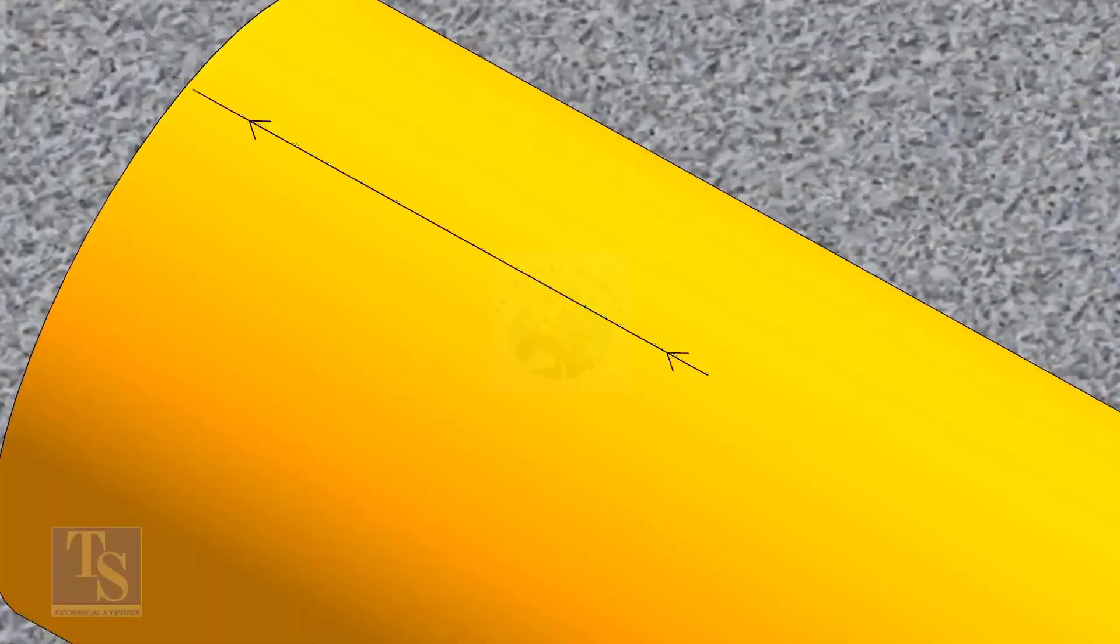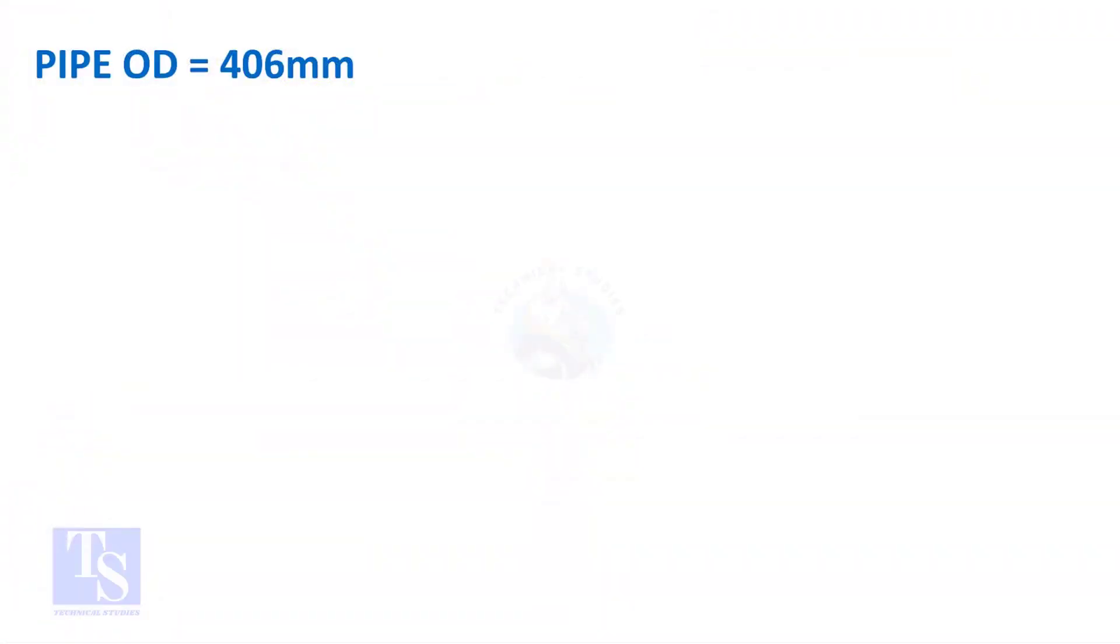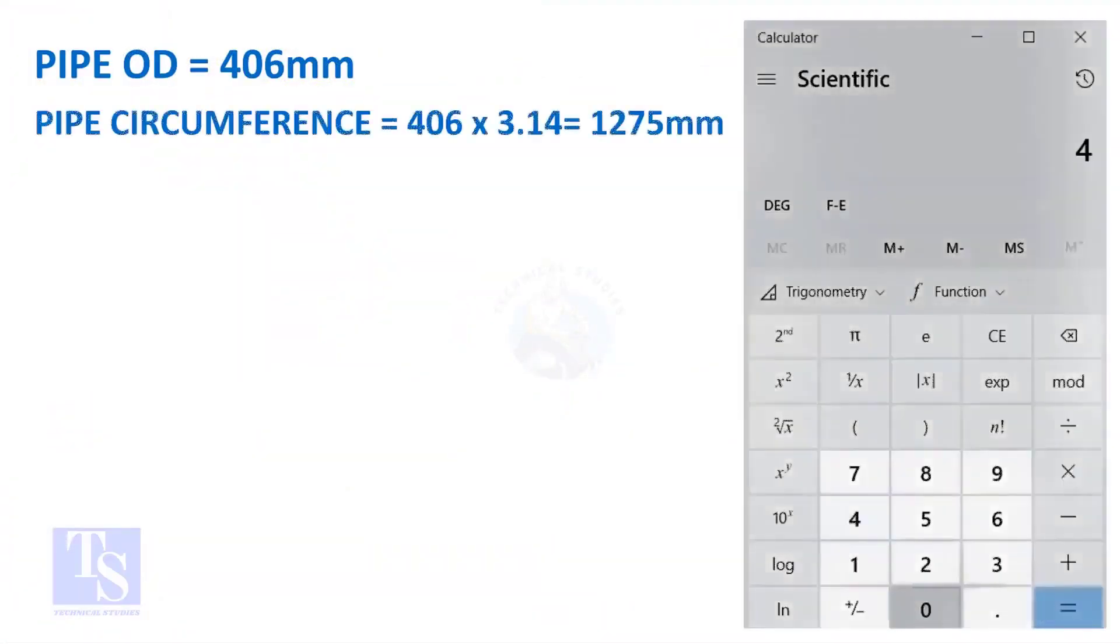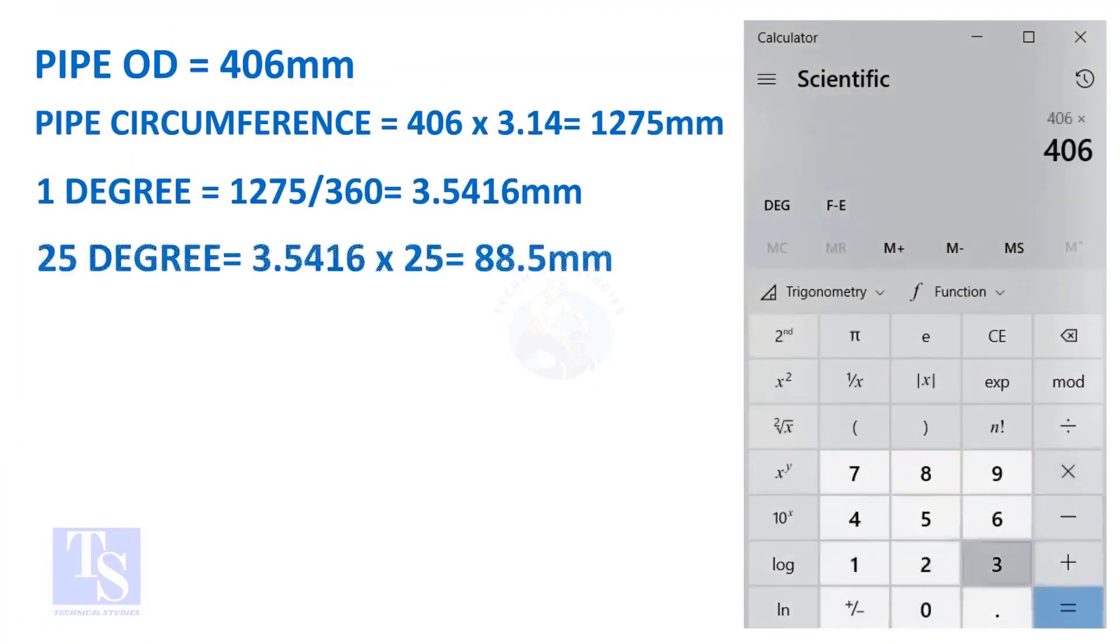Let us calculate the circumferential distance or arc length for 25 degrees. Multiply the OD by 3.14. You will get the circumference of the pipe. Divide the circumference by 360, you will get the arc length of 1 degree. And finally, multiply the 1 degree arc length by 25. Now you have the arc length of 25 degrees. You can apply this formula to get the arc length of any degree.